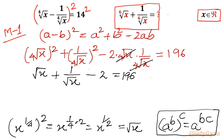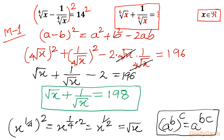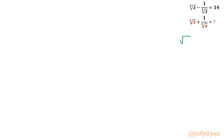Adding 2 to both sides gives us our first result: square root of x plus 1 over square root of x equals 198. Now I will consider our expression — the 6th root of x plus 1 over 6th root of x — and set it equal to a.